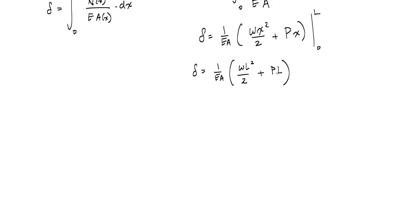I'll get that this deformation 1 over ea is wl squared over 2 plus p times l, right here. And all of this should look familiar. The pl over ea looks like just axial deformation if we were to neglect the self-weight. And then here, this is the contribution of the self-weight right here, this wl squared over 2.